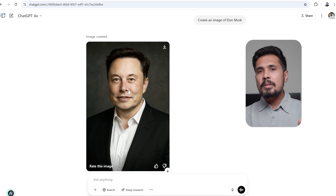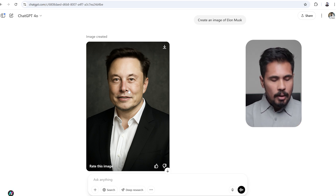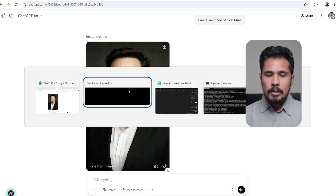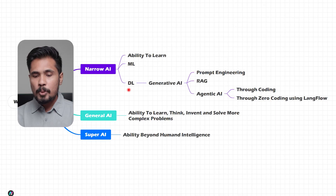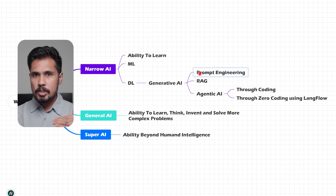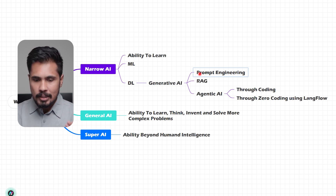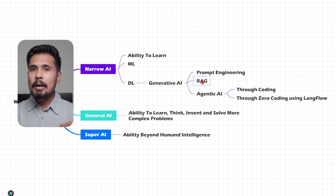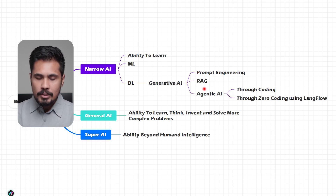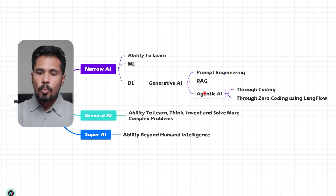Within generative AI, we have another segment with three levels. One is prompt engineering, another is called RAG, and the third is called agentic AI.